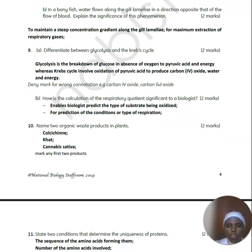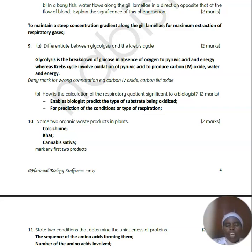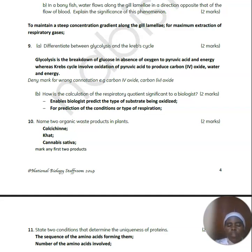In a bony fish, water flows along the gill lamellae in a direction opposite to the flow of blood. This is called the counter-current exchange system. Blood flows in the opposite direction to water so that there is a steep concentration gradient between the two, allowing oxygen to easily diffuse from the water into the blood of the fish and carbon dioxide to diffuse from the gill filaments into the water, making gas exchange very efficient.